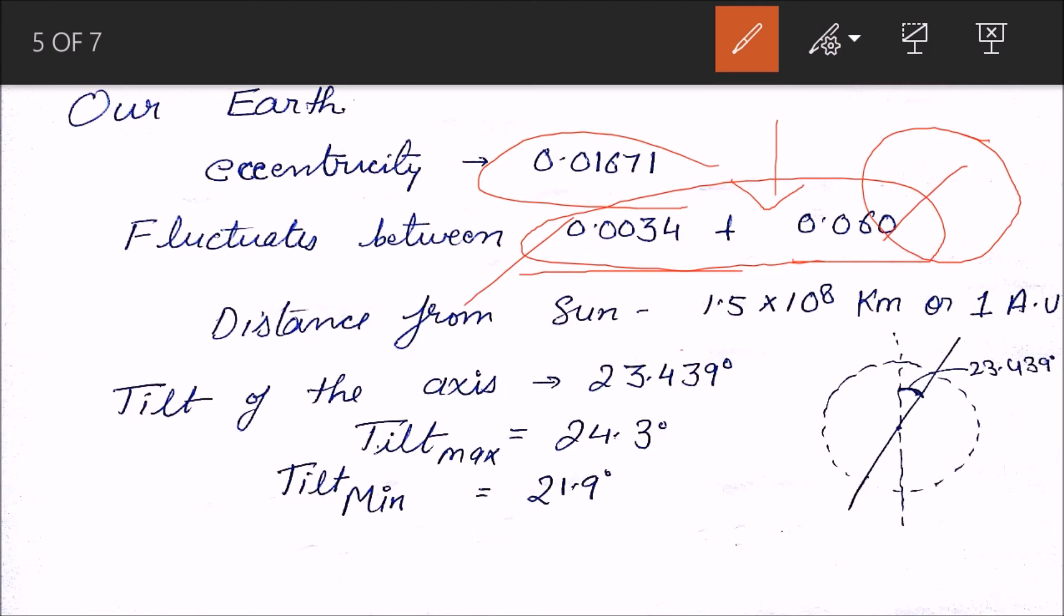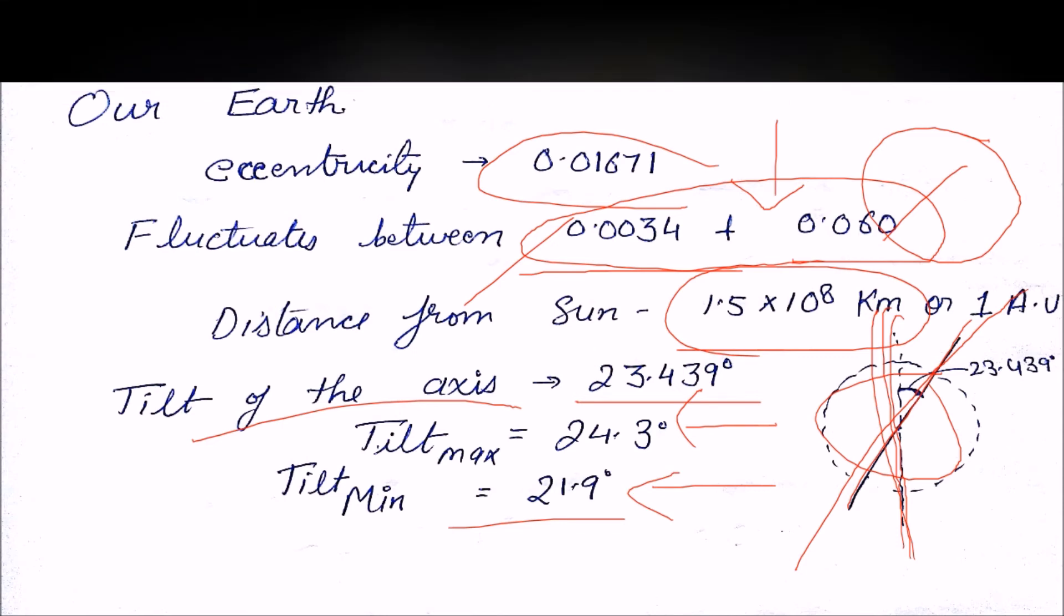One astronomical unit is the distance between Earth and the Sun. The tilt of the axis: if you see, this is Earth, this is the line perpendicular to the equatorial plane, and the axis about which Earth rotates makes an angle with this normal, called the tilt. Presently, the tilt of Earth is 23.49 degrees. Maximum tilt can be 24.3 degrees, and minimum can be 21.9 degrees. There are some properties of Earth we need to see in detail, but before that, we will see Mars.